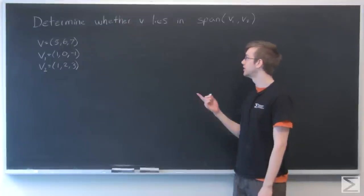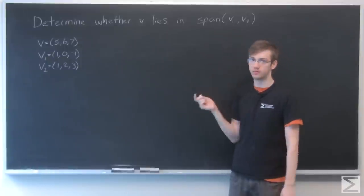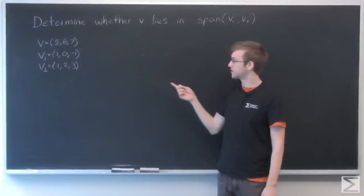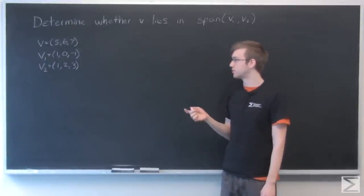For this problem, we need to determine whether v lies in the span of v1 and v2. v is 5, 6, 7, v1 is 1, 0, minus 1, and v2 is 1, 2, 3.